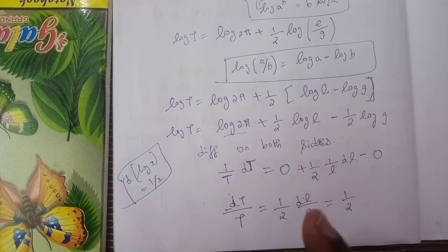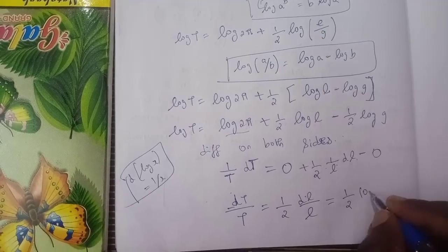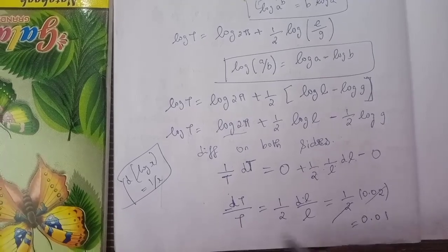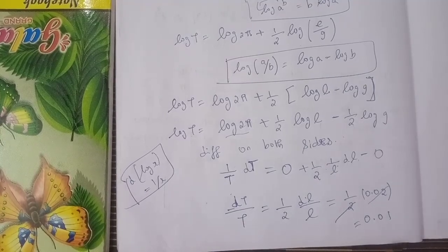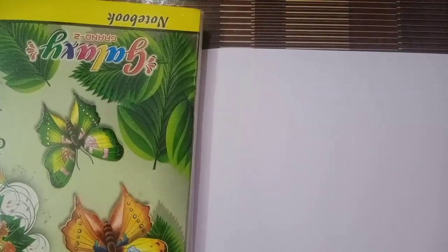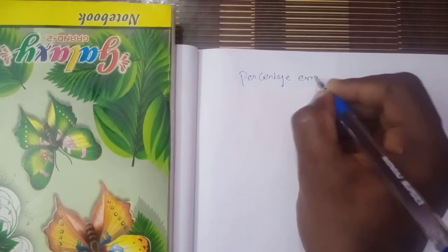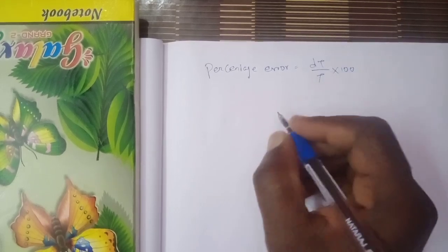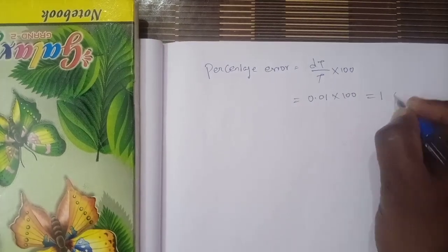So dT/T = (1/2) × dL/L = (1/2) × 0.02 = 0.01. The percentage error in T is dT/T × 100 = 0.01 × 100 = 1%. Therefore, the approximate percentage error in the calculated value of T is 1 percentage.